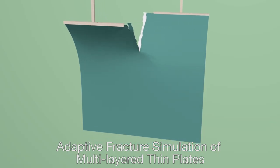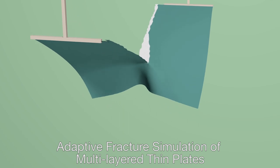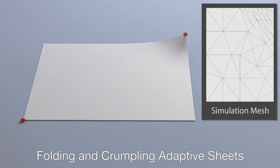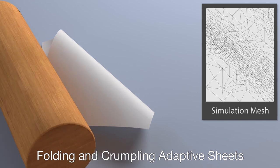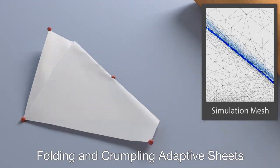A new approach to thin plate fracture realistically simulates this tearing paper, whereas folded and crumpled paper is simulated by an adaptive mesh refinement approach shown in the upper right.